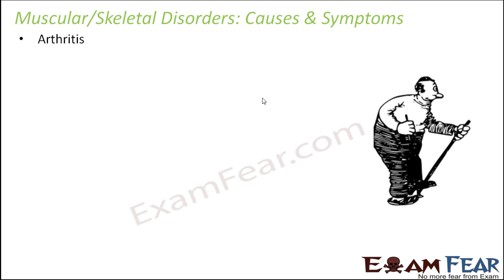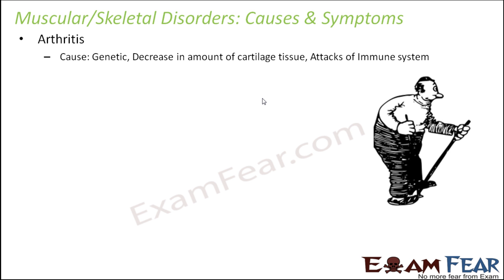Let us start with arthritis. It is a very common name which you would have often heard — somebody is suffering from arthritis. It generally happens to old people, however that is not necessary. The cause of arthritis can be many things: it can be genetic, it can be a decrease in the amount of cartilage tissue, or it can happen when the immune system attacks the cells of the musculoskeletal system. There are different types of arthritis depending upon the cause.